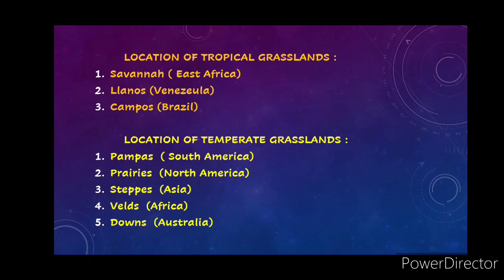Now let's move to the next slide covering the tropical grassland and temperate grassland of the world and their locations. The Savannah is the tropical grassland. Don't mix up tropical and temperate grasslands — tropical grasslands are located in the tropical region near the equator, while temperate grasslands are in the mid-latitude region.